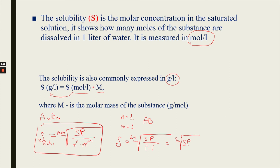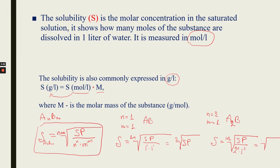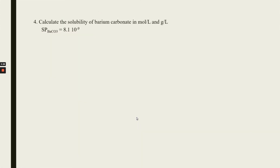For a compound like A₂B where N=2 and M=1, the solubility equals the cube root of the solubility product divided by (2² × 1¹) = cube root of SP/4. So now let's solve the problem.